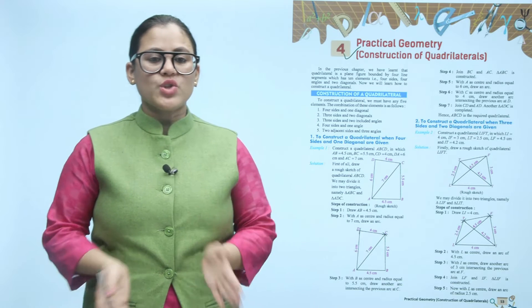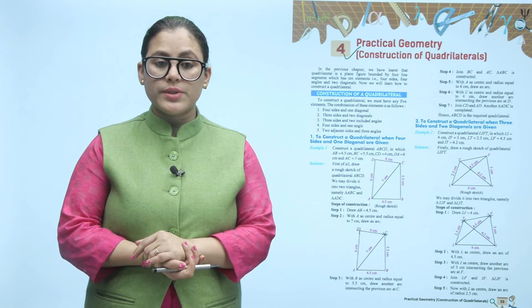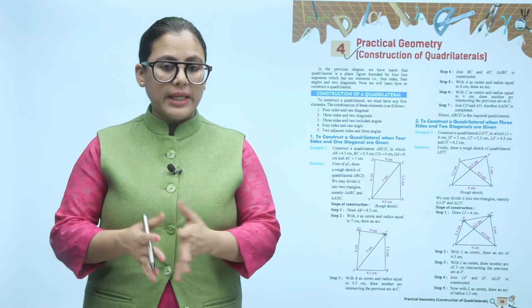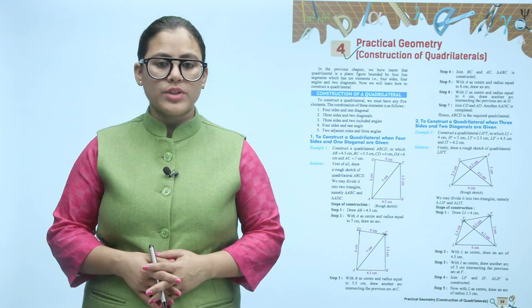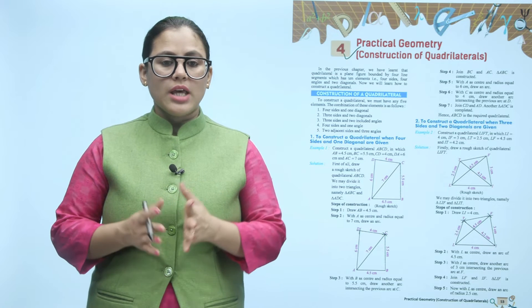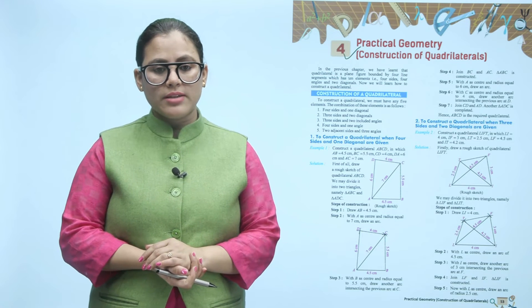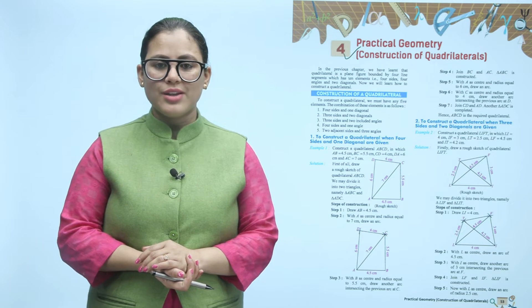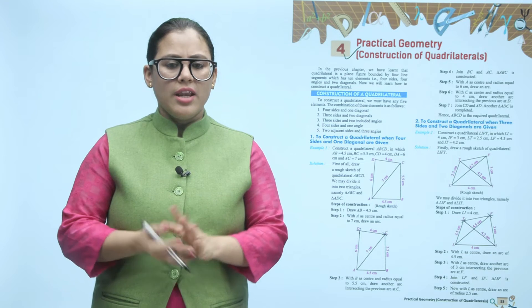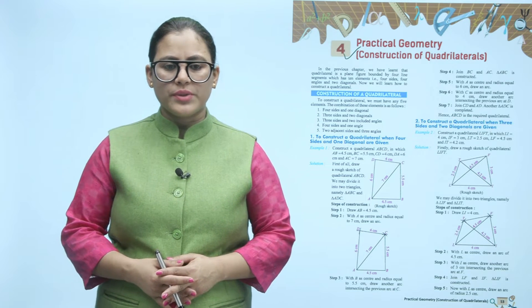In the previous chapter we learned that a quadrilateral is a plane figure bounded by four line segments, which has ten elements: four sides, four angles, and two diagonals. Now we will learn how to construct a quadrilateral.